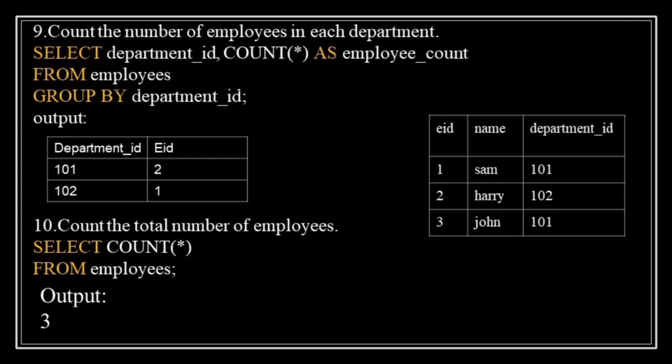To count the total number of employees in a table, use the COUNT function without grouping: SELECT COUNT(*) AS total_employee FROM employee. If the employee table has three employees, the result will be three — meaning there are three employees in total.